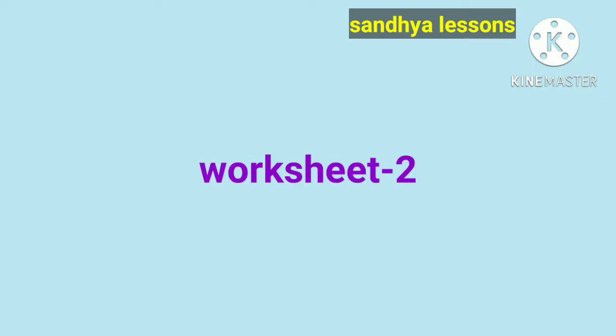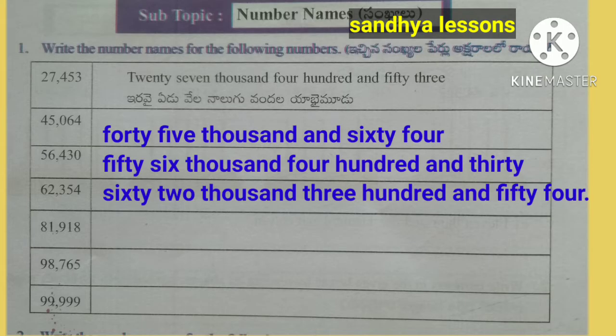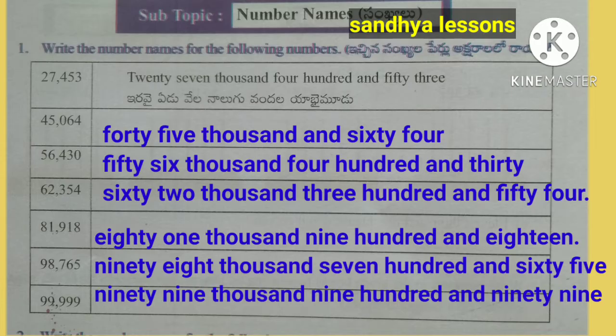Worksheet 2. First: Write the number names for the following numbers: 45,064; 56,430; 62,354.